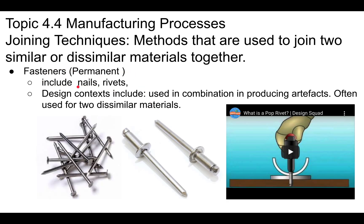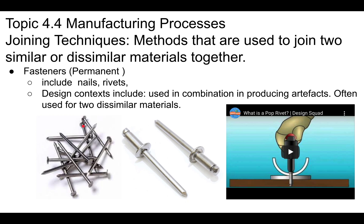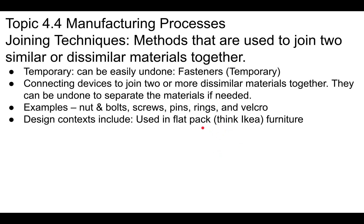Fasteners can also be permanent. One example is nails — generally, once you put a nail in something, it's not easy to remove, so it's considered a permanent joining technique. You also have rivets. Watch the video to see how they work; we actually have one of these hand riveters at school. Design contexts include combining different artifacts using dissimilar materials, and locker doors at school are attached to hinges with pop rivets.